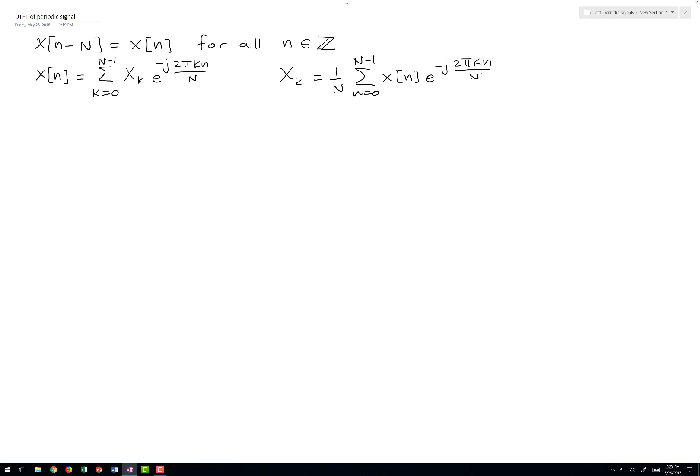It turns out that the Fourier transform of a periodic signal is quite easy. We'll just take the Fourier transform of the Fourier series representation. So x of n in the time domain becomes x of f in the frequency domain.